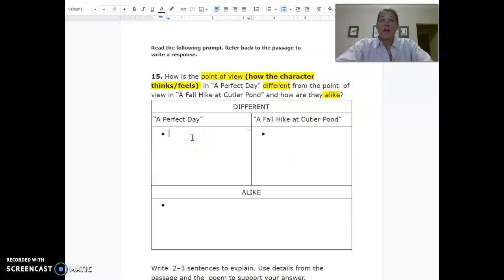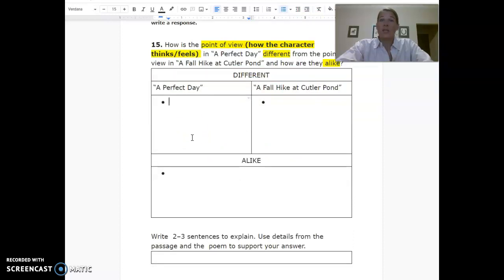I've created a top hat for you, which is an organizer, for you to organize the differences. So in these first two blocks, you'll put how A Perfect Day is different from A Hike at Cutler Pond in these first two. And I've added little bullets just to help keep the things that you list separated. And at the bottom, how are they alike? How are they the same?